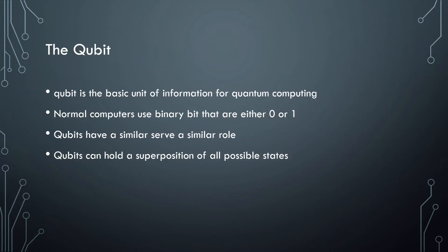The next topic I am planning to cover is qubits and what they are. A qubit is the basic unit of information for quantum computing. Normal computers use binary bits that are either 0 or 1. Qubits serve a similar role to binary bits.